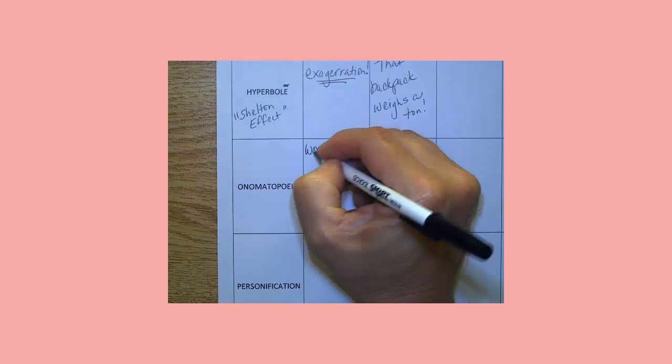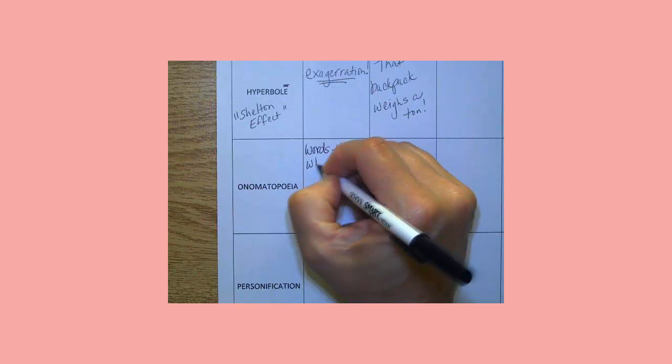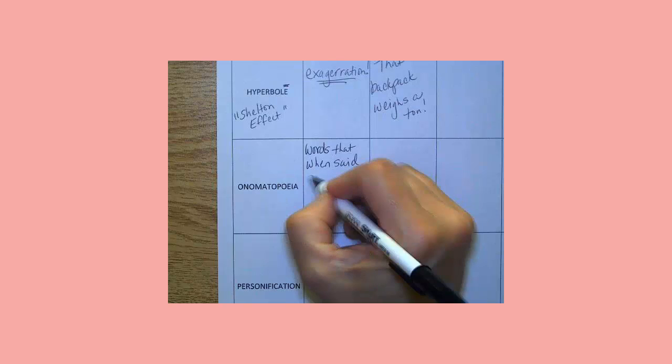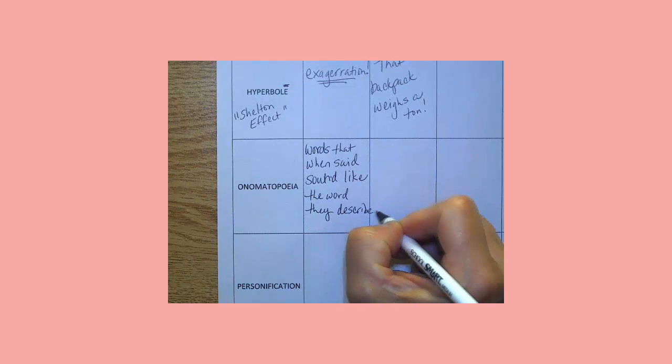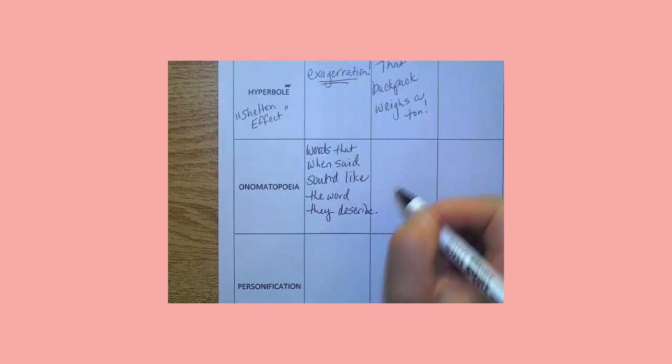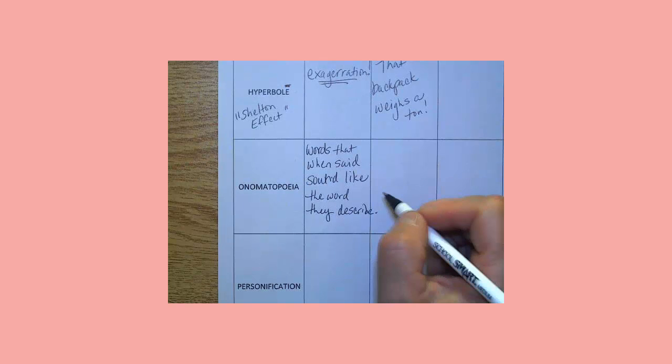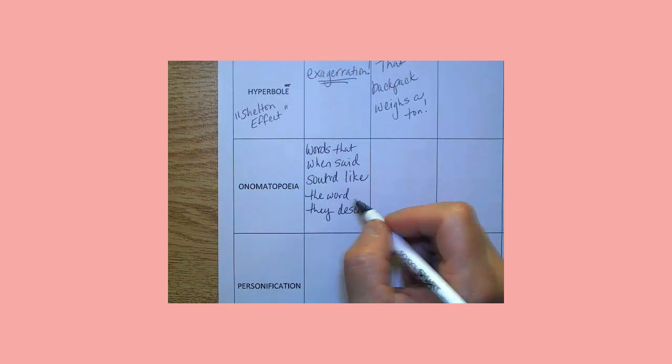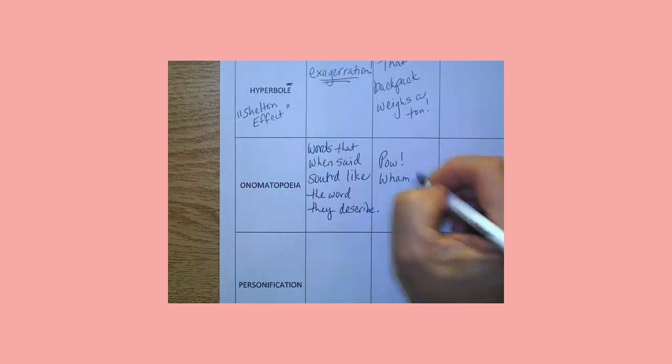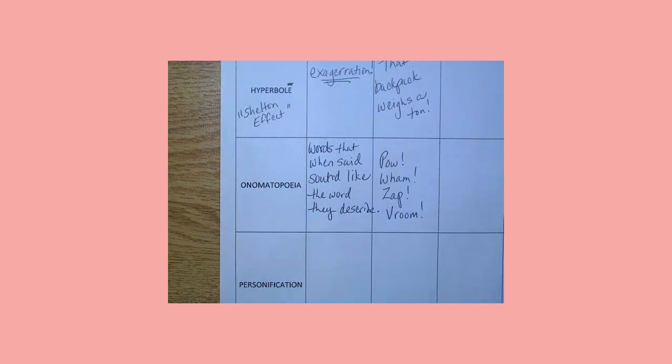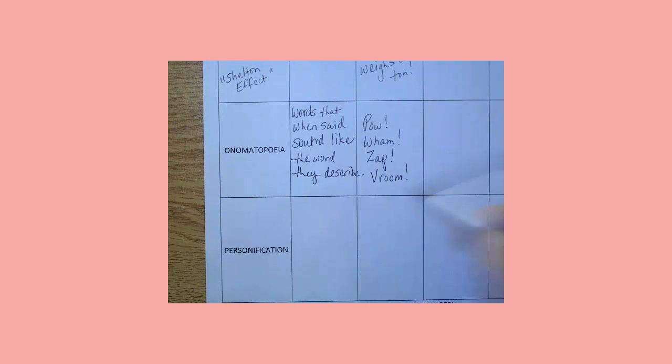Let's write that down so you can think about it. Words that when said, sound like the word they describe. Anybody ever watch an old Batman on TV Land? Back in the 60s, they weren't allowed to show very much violence on TV. So whenever Batman got in a fight, they would use onomatopoeia. And they would blur him out, and on the screen they'd put pow, wham, zap. And I'm just going to add vroom, because I like things that go fast. So I'll put vroom in there. But these are all words that sound like the word they describe. Another one is bun.